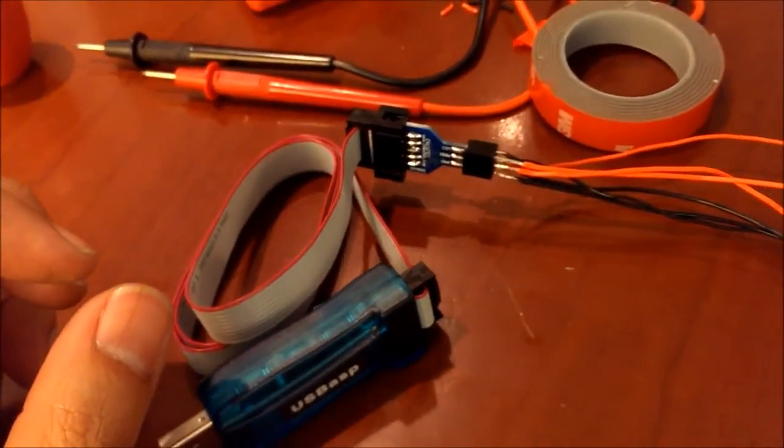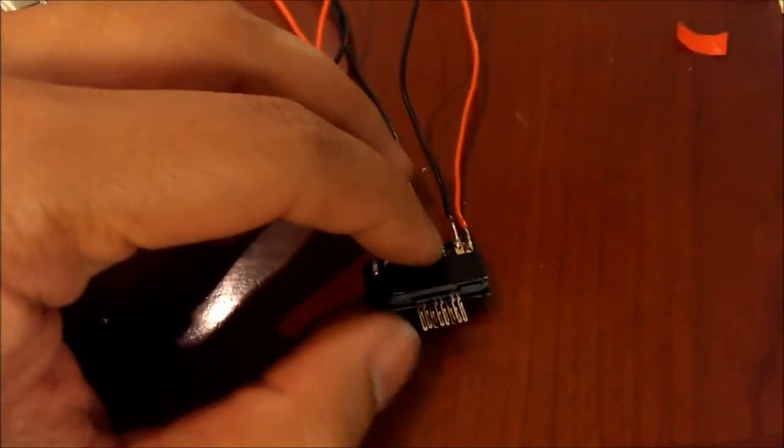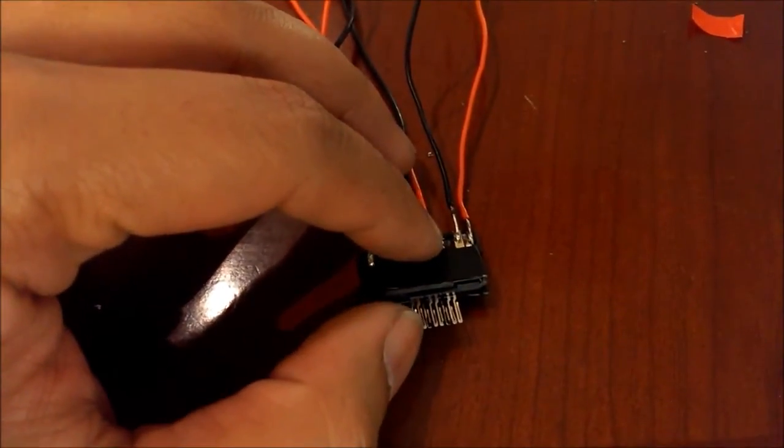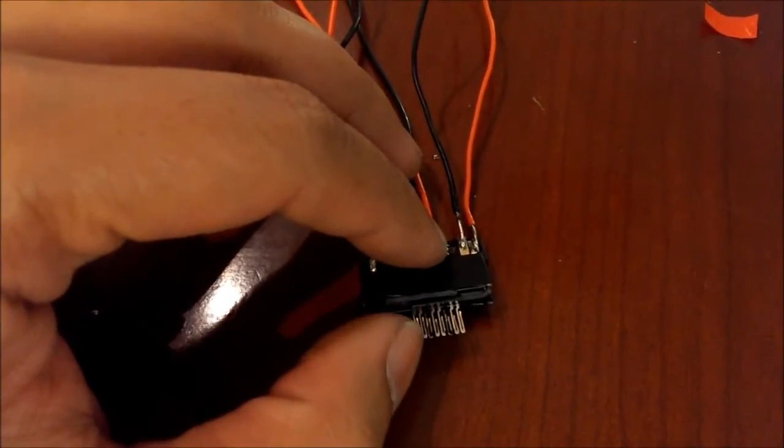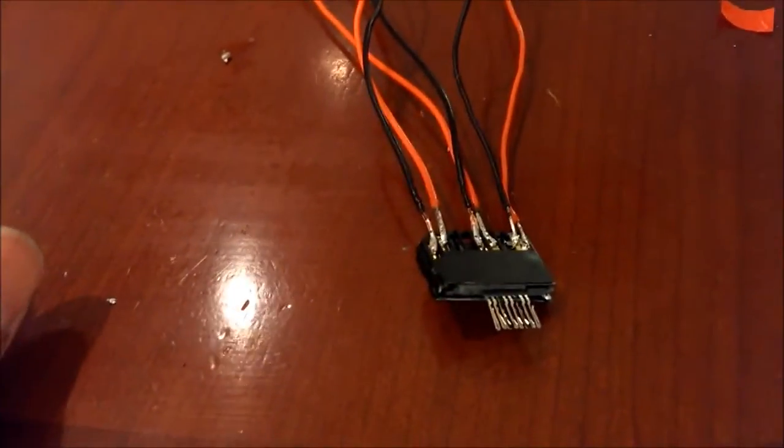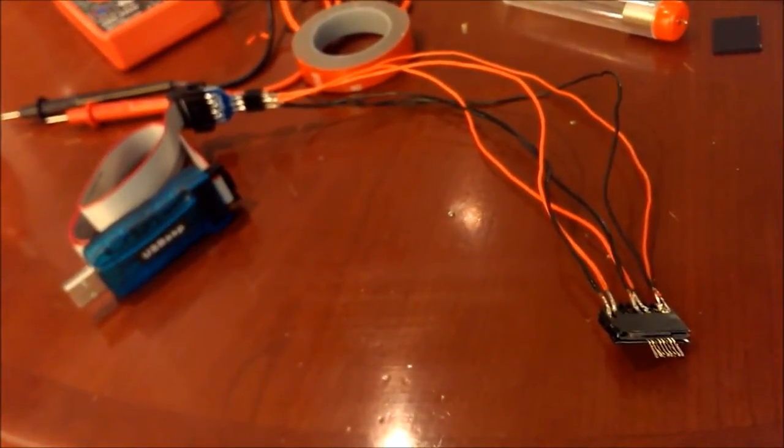So that's pretty much how you do it. Just go ahead and bend these pins here, bend these apart to fit the tiny 6 pads on your ESC, and you should be good to go to flash Simon K.